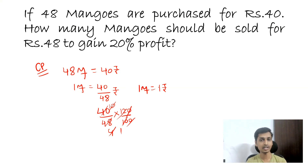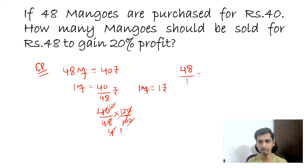So if the selling price of one mango is one rupee, then for 48 rupees, how many mangoes do you have to sell? It is 48 by 1, which is 48 mangoes. And that is our answer.